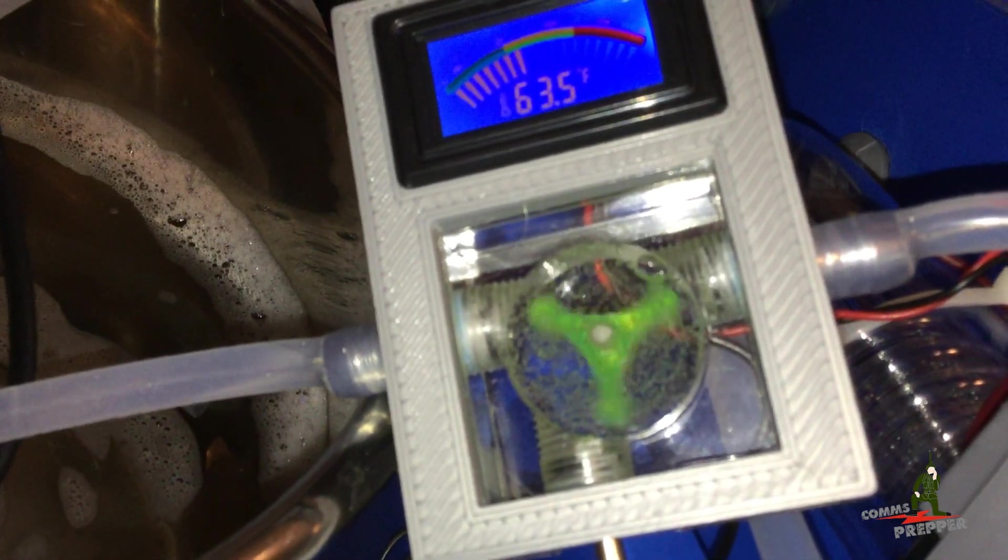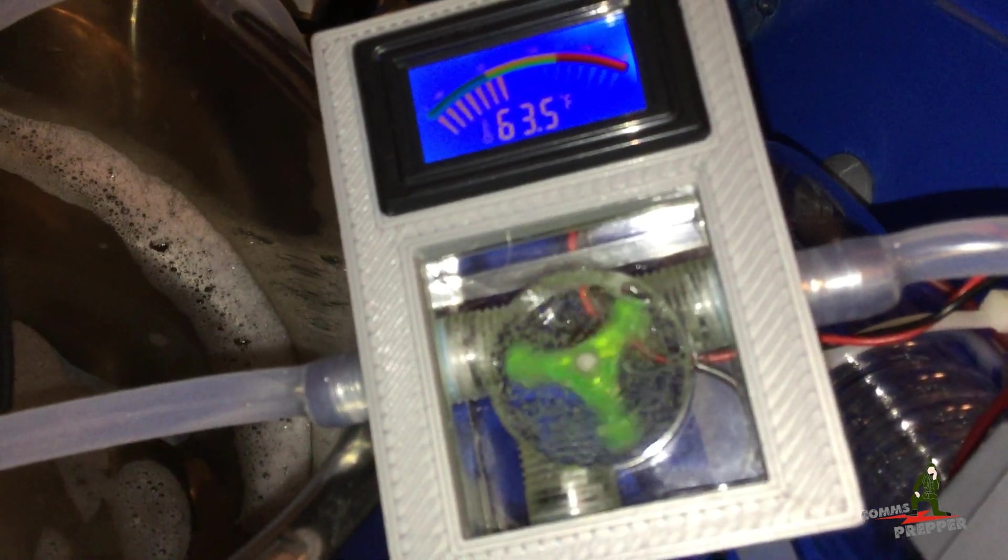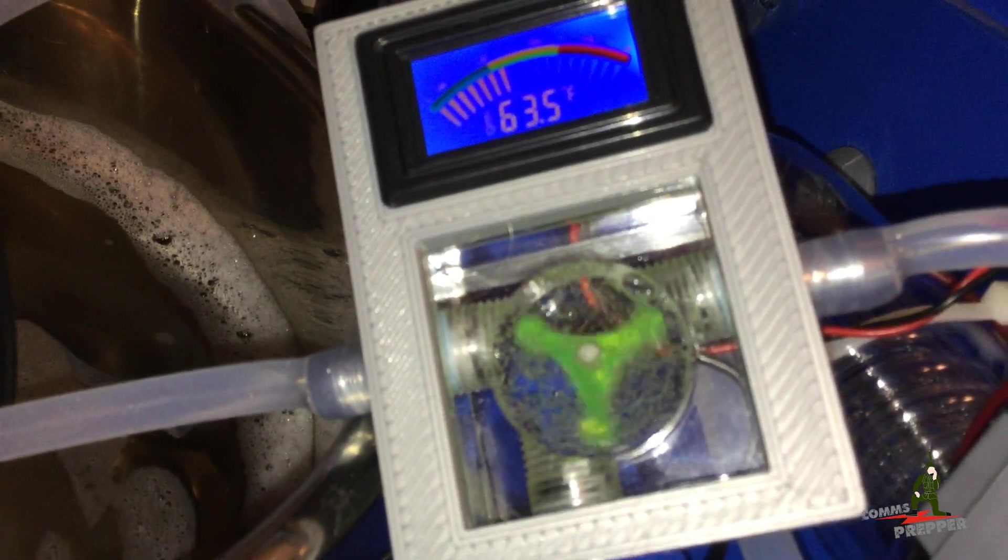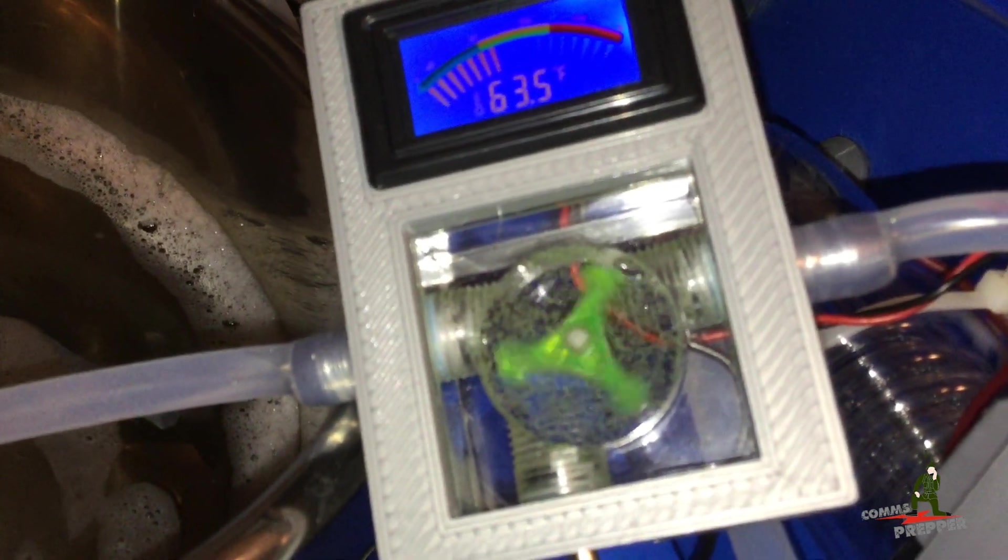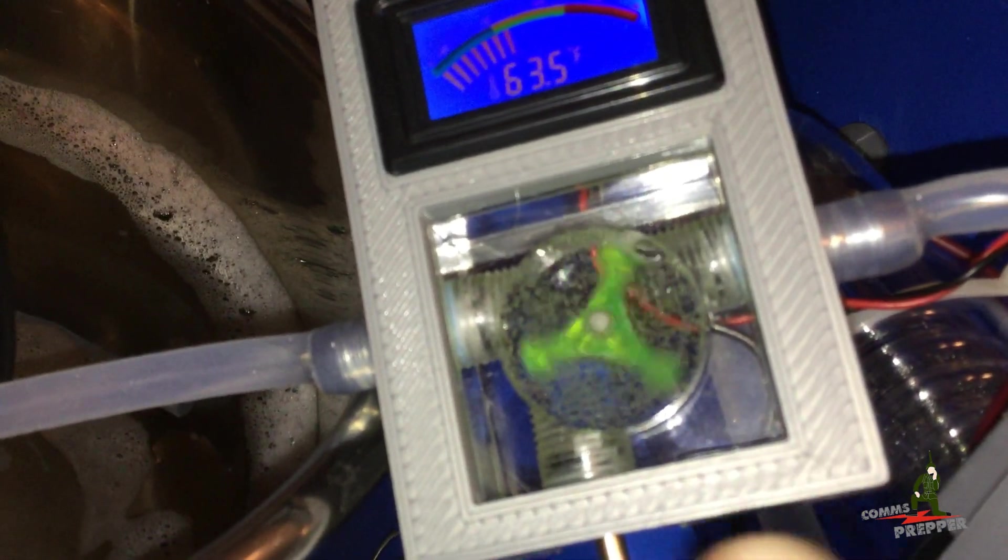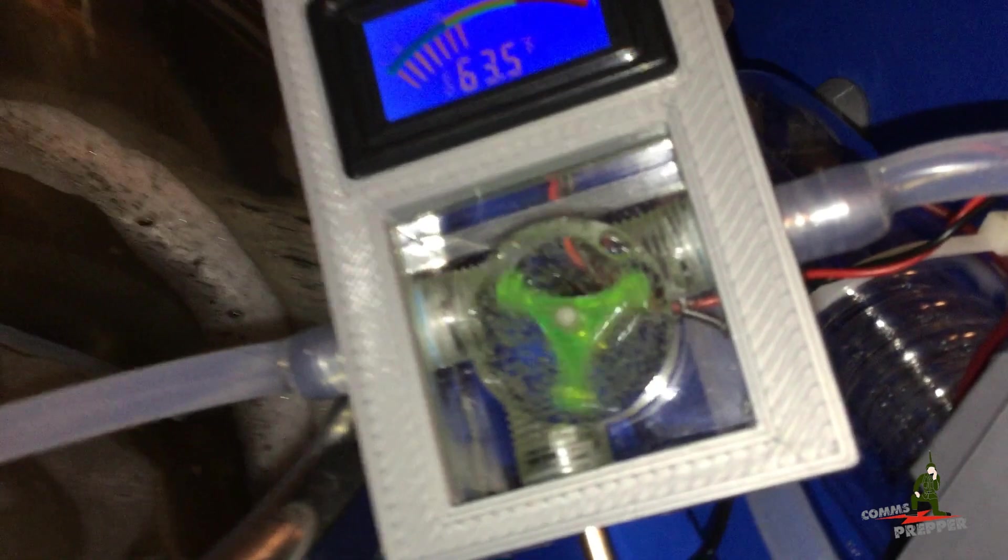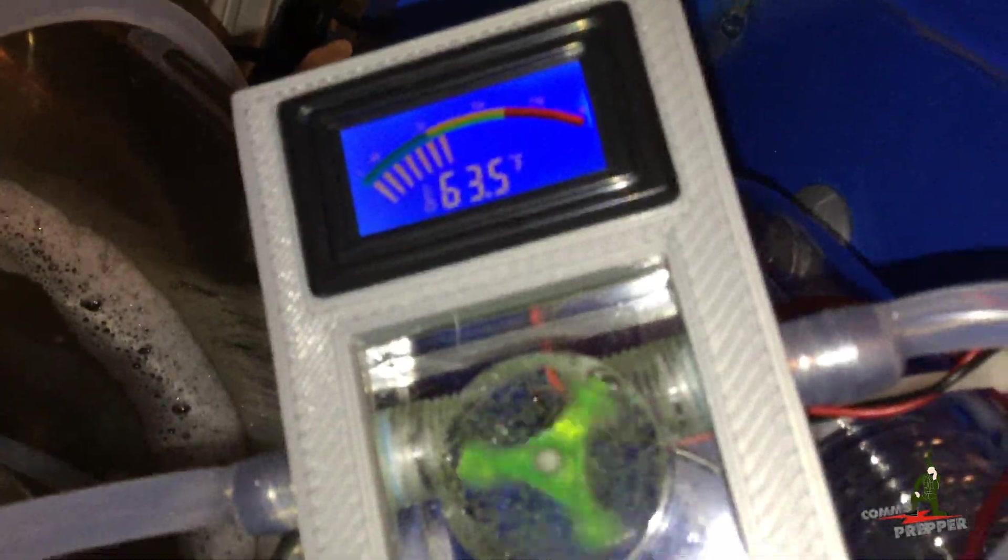I didn't put this in line on the input because if something goes wrong downstream this would still be turning, giving me a false sense of cooling. So I put this on the output so the output of the tube comes and runs into this flow sensor, letting me know that there's water flowing through the entire system and I can monitor the output temperature.